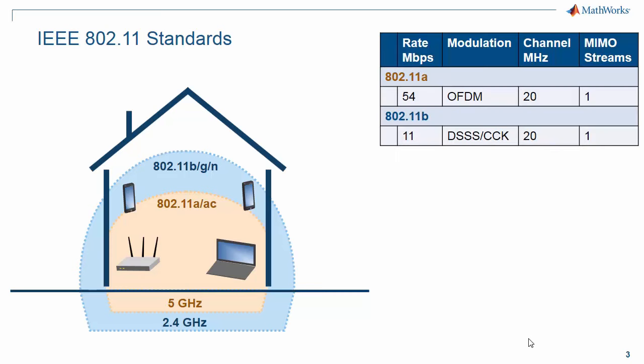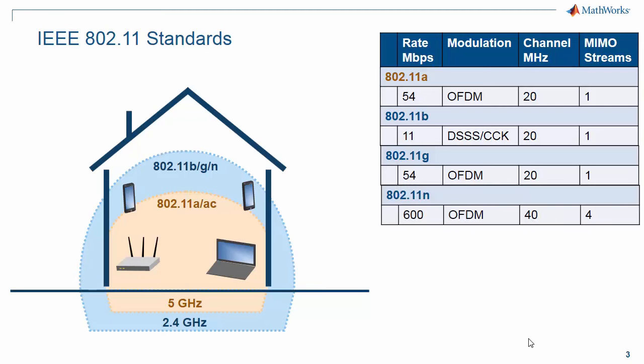802.11 B and A support transmission in a 20 MHz channel bandwidth using a single stream of data with maximum throughputs of 11 and 54 Mbps respectively. 802.11 A uses OFDM, and 802.11 B uses DSSS or CCK modulation schemes. 802.11 G has the same physical layer as 802.11 A, but operates in a 2.4 GHz band. 802.11 N increases the maximum throughput to 600 Mbps by allowing for a larger 40 MHz channel bandwidth and MIMO transmissions with up to 4 spatial streams. 802.11 AC supports a maximum bandwidth of 160 MHz, up to 8 spatial streams, and multi-user MIMO with up to 4 users. These capabilities allow for a theoretical maximum throughput of 7 Gbps.